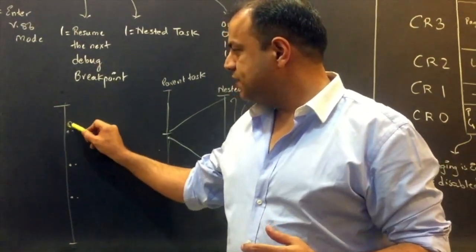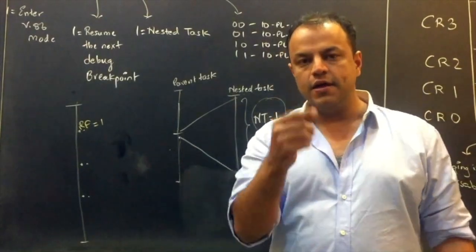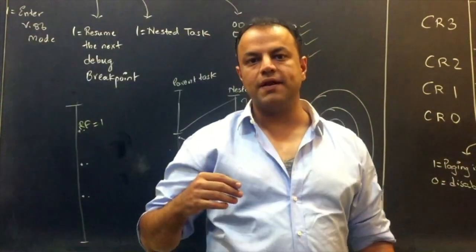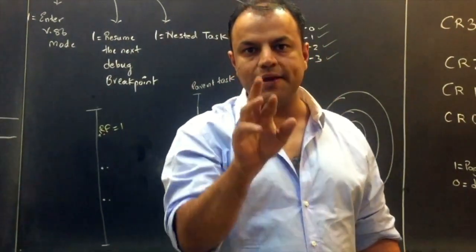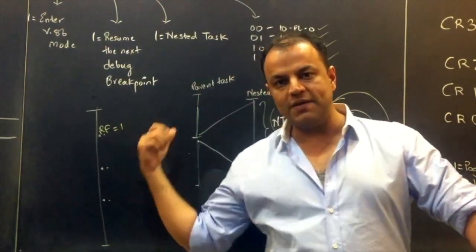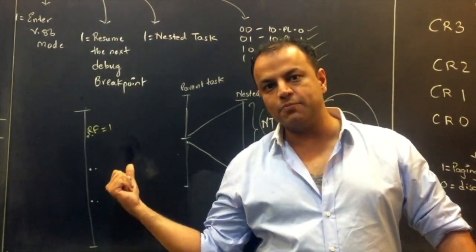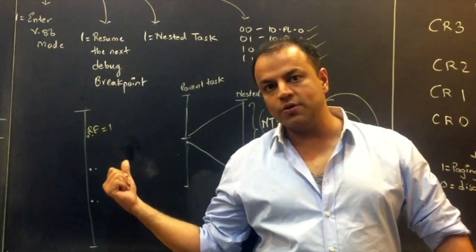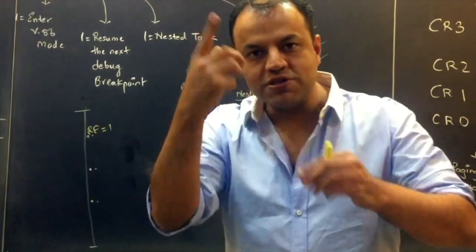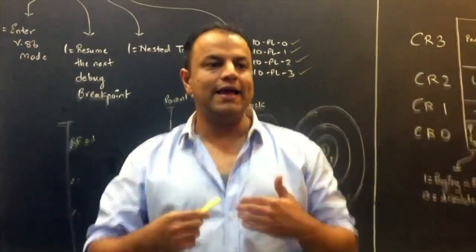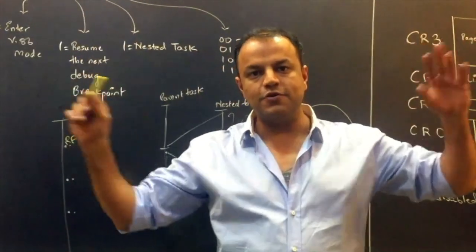The solution is the RF — Resume Flag. If you set RF to 1, it resumes from the next debug breakpoint, meaning it skips the next debug stop and continues. The moment it skips one debug breakpoint, the flag automatically becomes 0. So even inside a loop, you set RF to 1, it skips the breakpoint, automatically becomes 0, and you set it to 1 again for the next iteration. When the loop ends, RF is 0 and the program stops at the next relevant breakpoint normally.